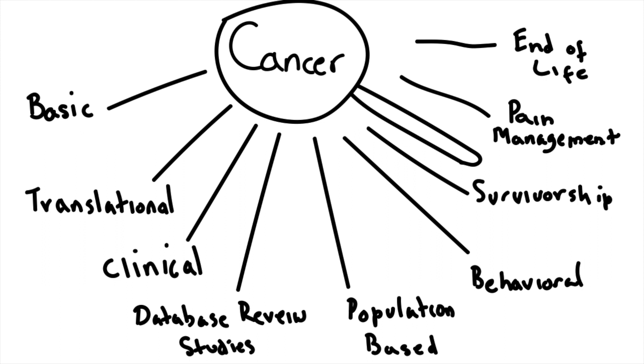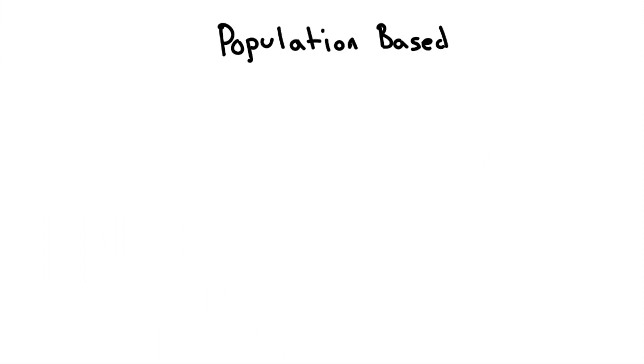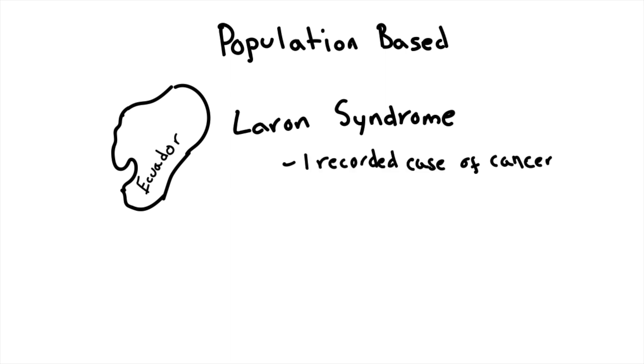One of the ways to study cancer is to look at groups of people that have very low rates of cancer and figure out what makes them different. One such group of these people live in Ecuador and have a condition called Laron syndrome. In all of the observations of people with Laron syndrome there has only been one case of a cancerous growth and even then it was not malignant.